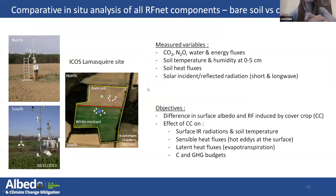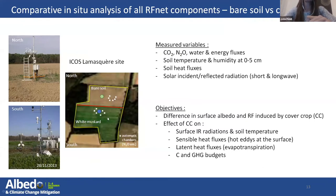We then did a comparative in-situ analysis of all components of the net radiative forcing. We divided the plot at La Masquerre into two subplots: one seeded with mustard and the other maintained as bare soil from September to the beginning of December. On those two subplots, we measured CO2, water and energy fluxes, temperature, humidity, soil heat fluxes, and solar incident and reflected radiation in both shortwave and longwave.